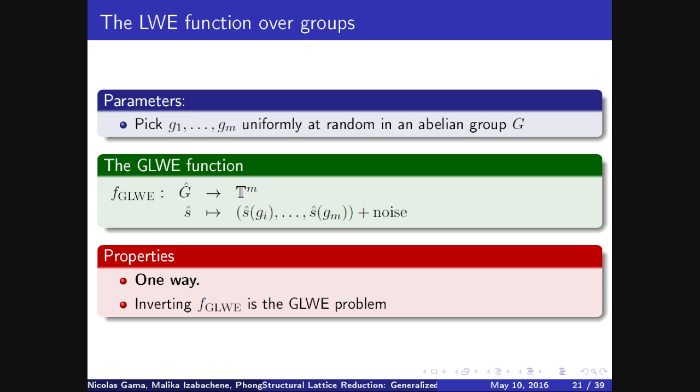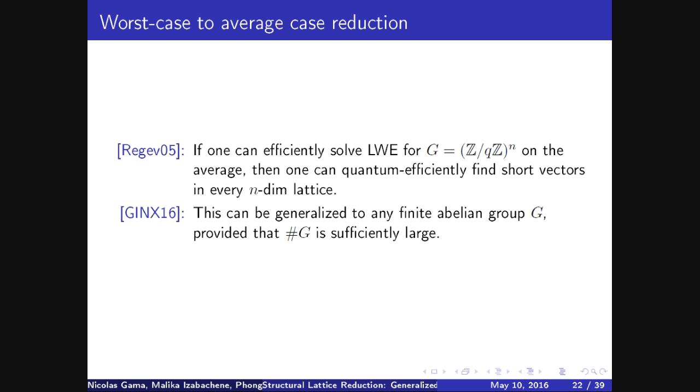So from that, what is the LWE function? As before, you take M elements uniformly at random in a group G, and the function is simply the following. It goes from the dual group to the torus, and it associates to a character the set of its evaluations. So this function, again, is one way, and if you invert it, you break the GLWE problem. Worst case to average case reduction: in 2005, Regev proved that if we solve LWE for the group Z/QZ to the N, then there is a quantum adversary against every N-dimensional lattice. And in this paper, we generalize that to any group which are sufficiently large.